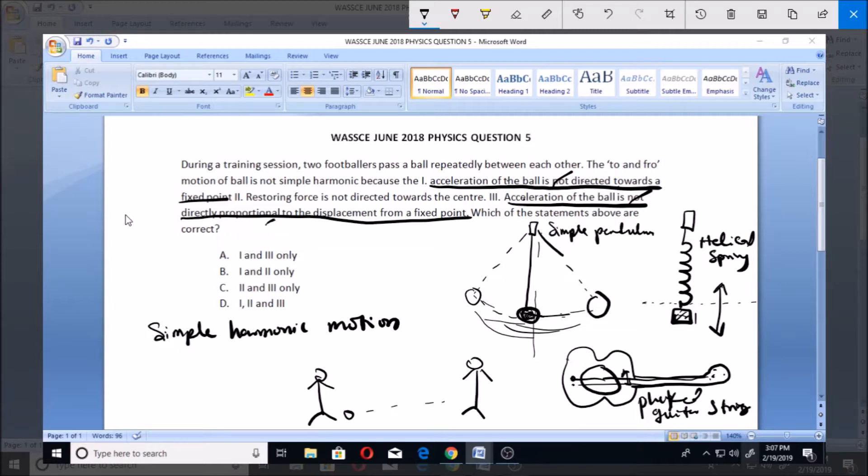You can see it's making a to and fro motion because it will go here and go here. But now it is not directed towards the center, because this person can apply some force that is even bigger than this person. So the rate at which this one is going is not necessarily the rate at which the ball is getting to this other person.